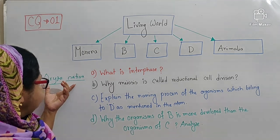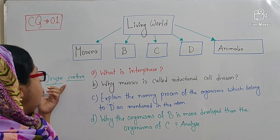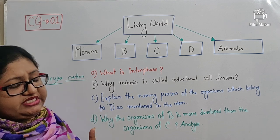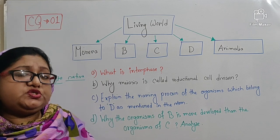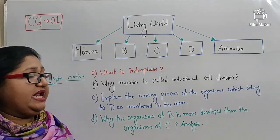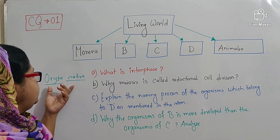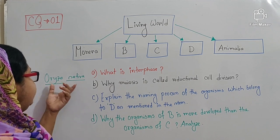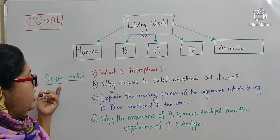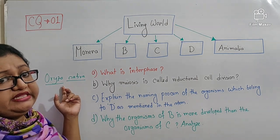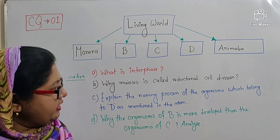The name should have two parts and when it is printed it should be in italic form. But when the name is handwritten, then the two parts should be underlined separately, as I have underlined this. This is another rule of naming the organism.